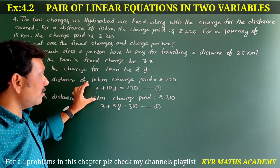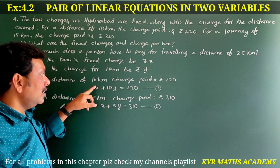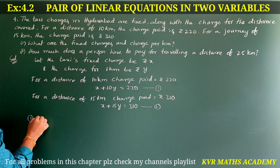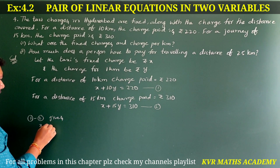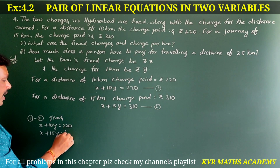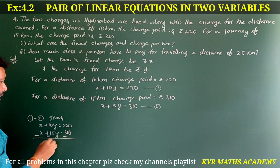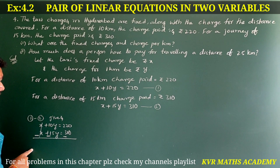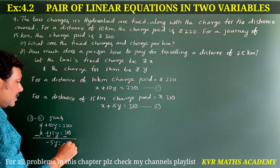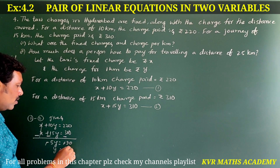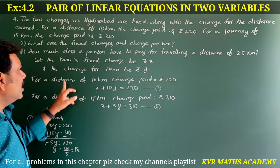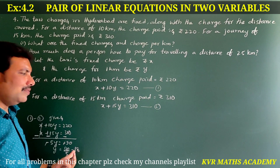Let us solve these two equations. Subtracting equation 2 from equation 1: x plus 10y equals 220 minus x plus 15y equals 310. X minus x cancels. 10y minus 15y gives minus 5y equals minus 90. The negatives cancel, so y equals 90 divided by 5, which is 18. Therefore the charge for 1 kilometer is equal to 18 rupees.